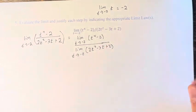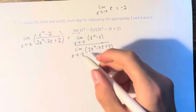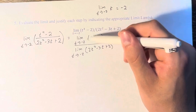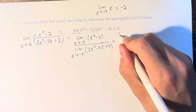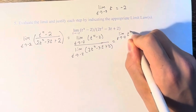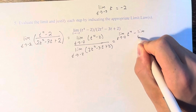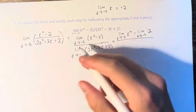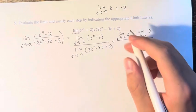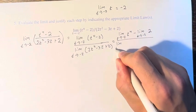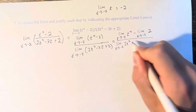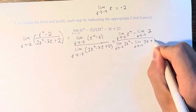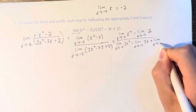Now, what we can do is split up the terms within the numerator and the denominator. So the limit of t to the 4th minus 2 is equal to the limit of t to the 4th minus the limit of 2. And the limit of 2t squared minus 3t plus 2 is equal to the limit of 2t squared minus the limit of 3t plus the limit of 2.